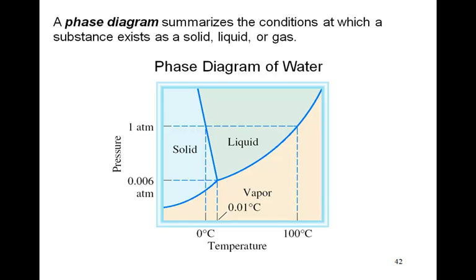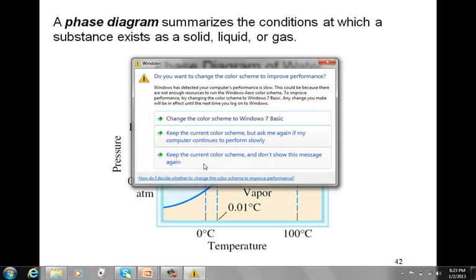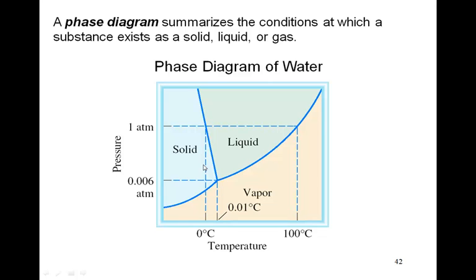So as you can see, there really isn't any scale to this. This represents 0.006 atmospheres and this represents one atmosphere. In this region right here, these are the temperatures and pressures under which water exists as a solid. In this area right here, these are the temperatures and pressures under which water acts as a vapor or a gas.